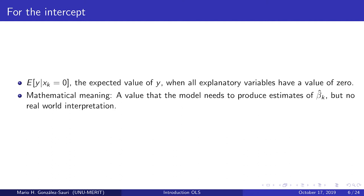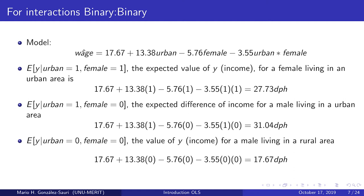To follow with the interpretation of binary interactions, let's take an example. We have a model with estimates from OLS: 17.67 for the intercept, 13.38 for urban, minus 5.76 for female, and an interaction coefficient of 3.55 for urban and female. The expected value of income for a female living in an urban area is 17.67 plus 13.38 minus 5.76 minus 3.55 times one times one, where both the urban and female variables equal one.